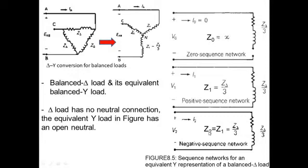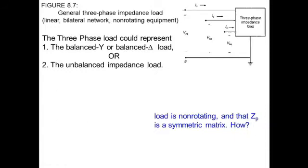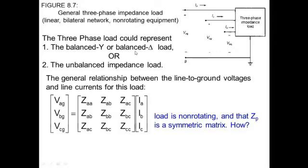Today's lecture is actually the continuation of the same lecture. If we want to generalize this system, we will be having three voltages — VAG, VBG, and VCG — relating or connected to the three-phase impedances. To find a relation, we will be having three matrices: the phase voltage matrix, the phase impedance matrix, and the current matrix.